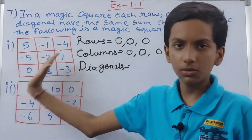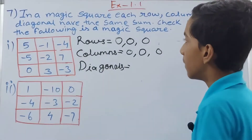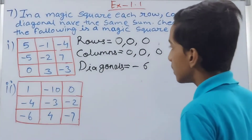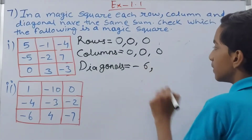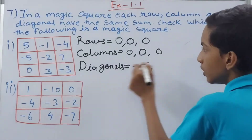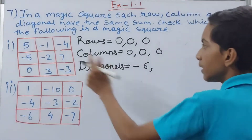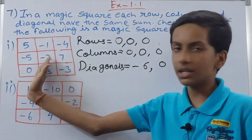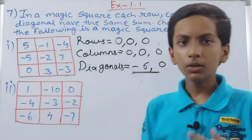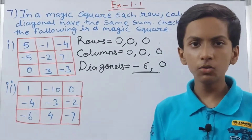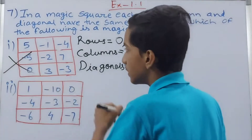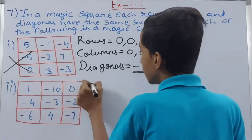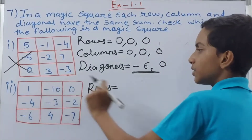Now the diagonals. First diagonal: minus 4 and minus 2 gives minus 6. So this diagonal sums to minus 6. The second diagonal: 5 minus 2 gives some values — minus 2 minus 3 is minus 5, and plus 5 gives zero. You can see everything is the same except this one diagonal which gives minus 6, not zero. Since even one sum is different, this is not a magic square.